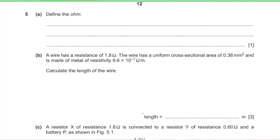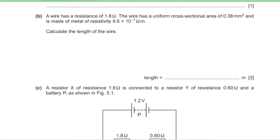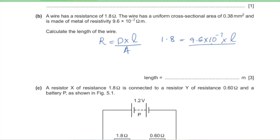Question 5, part A: define the ohm. 1 ohm = 1 volt per 1 ampere. Part B: a wire has a resistance of 1.8 Ω, cross-sectional area of 0.38 mm², and is made of a metal with resistivity 9.6 × 10⁻⁷ Ω·m. Calculate the length. Using R = ρL/A: 1.8 = (9.6 × 10⁻⁷ × L) / (0.38 × 10⁻⁶), giving a length of 0.7125 meters.